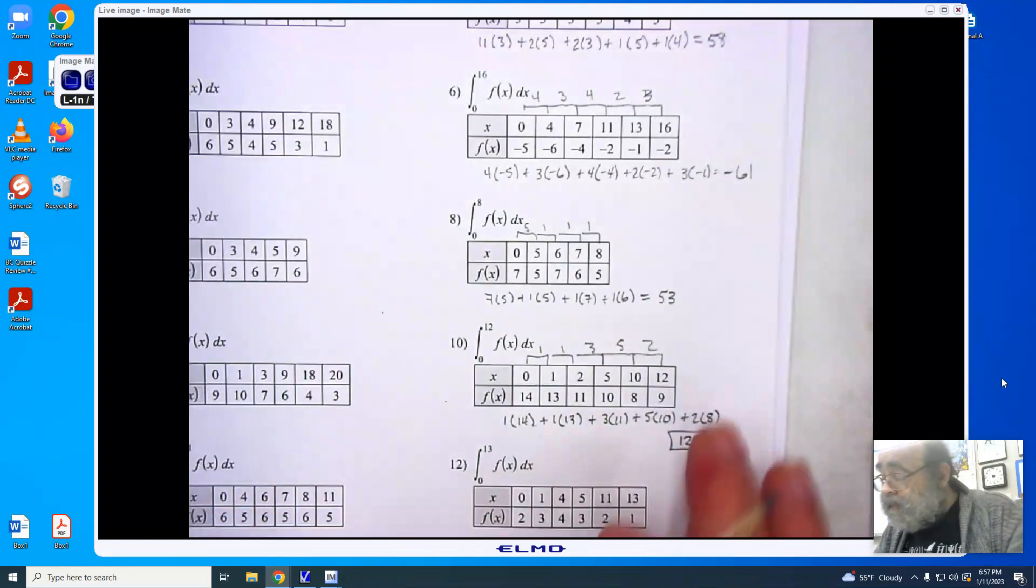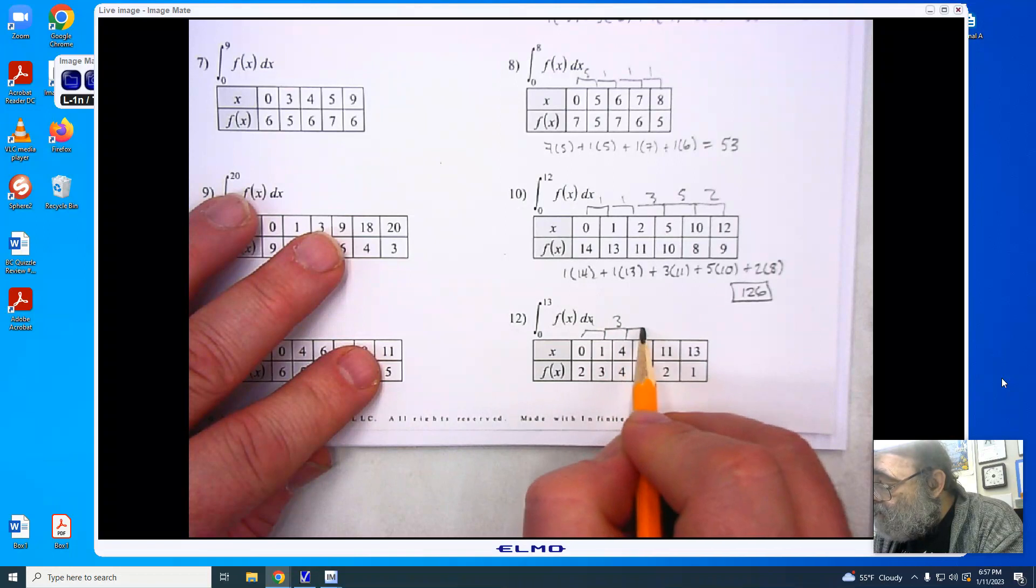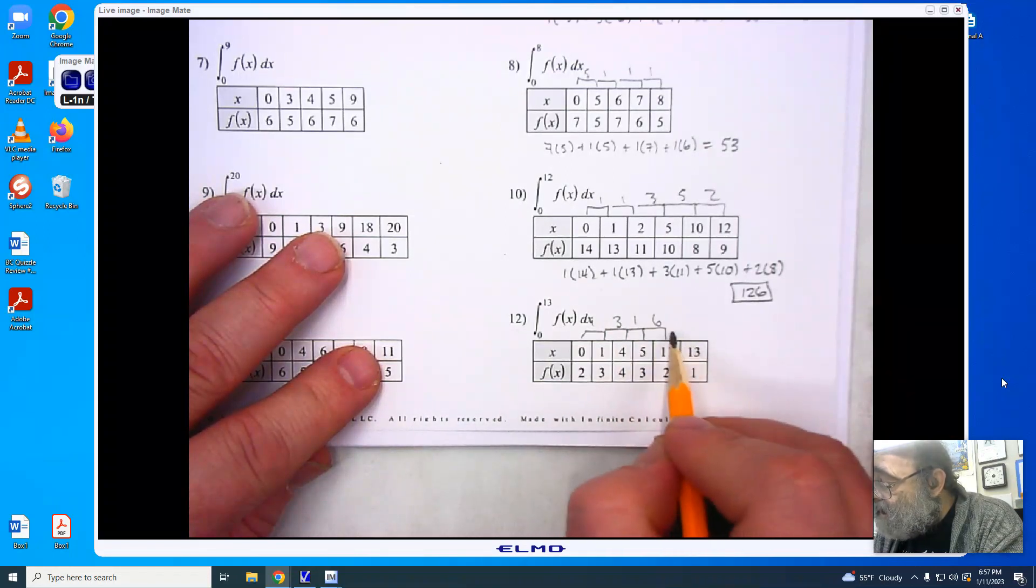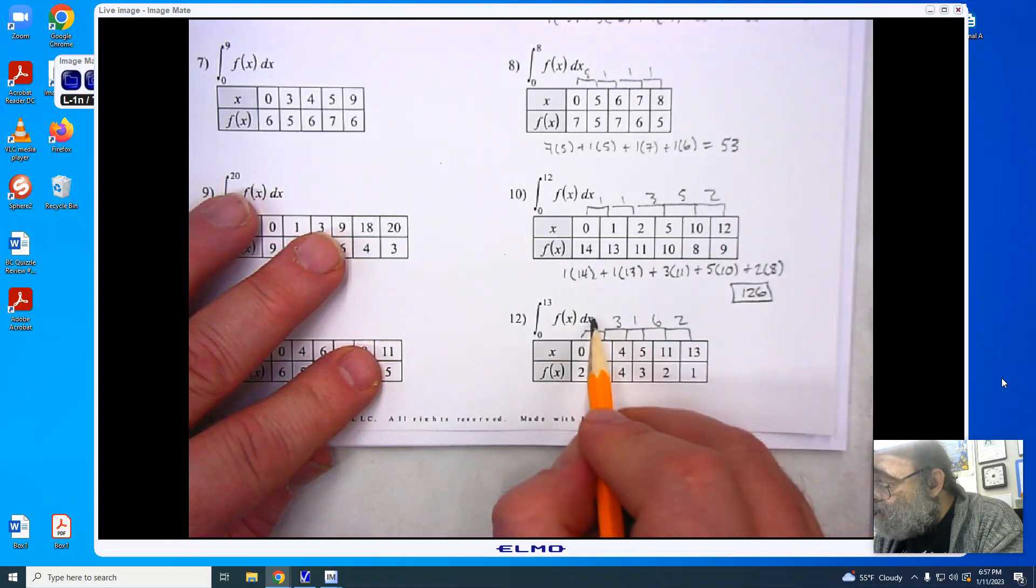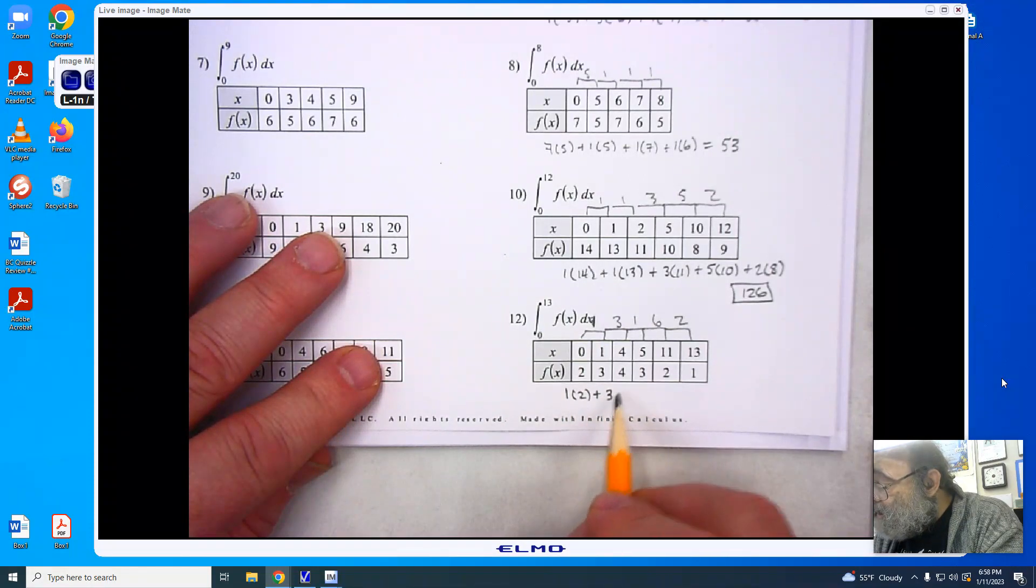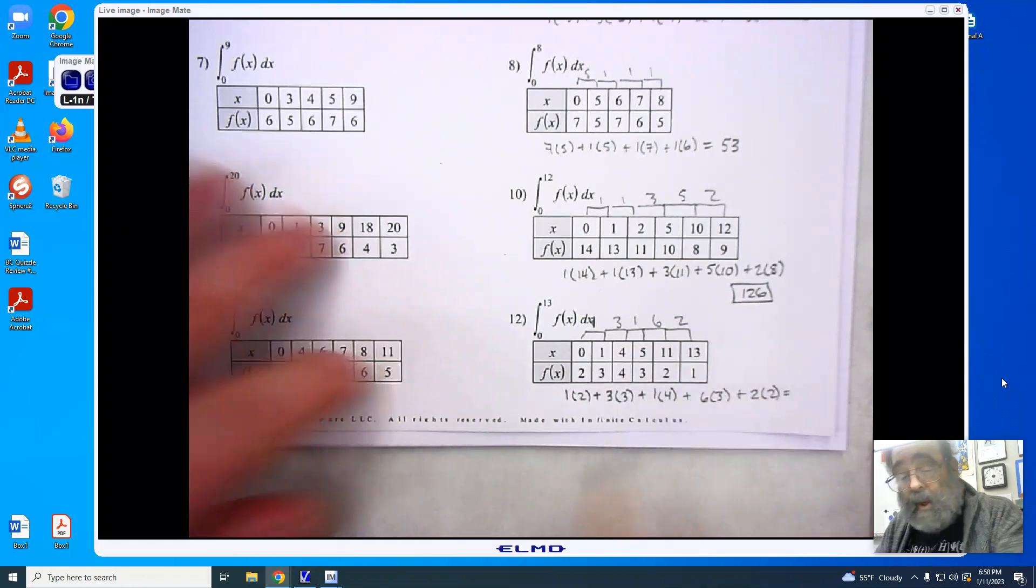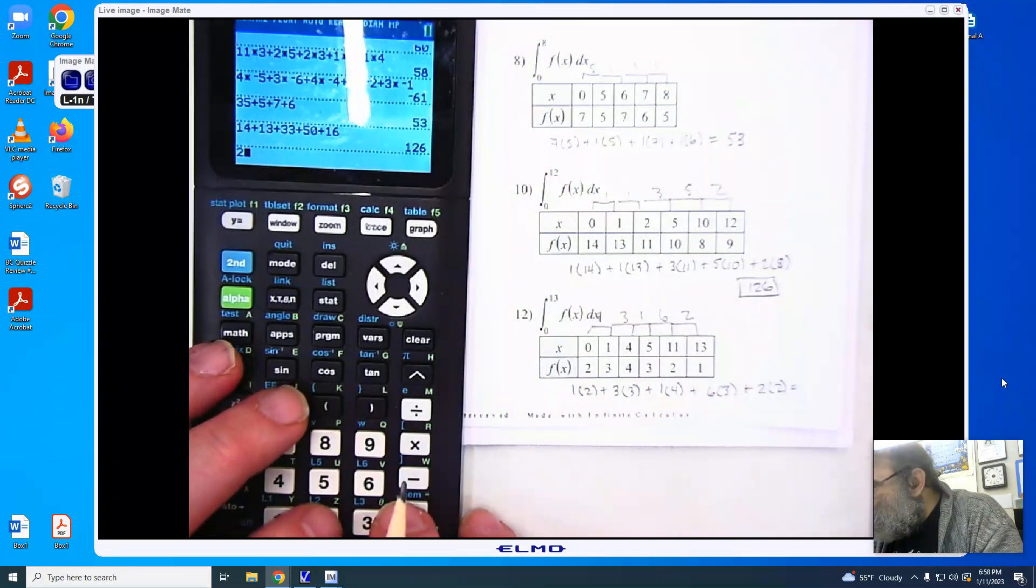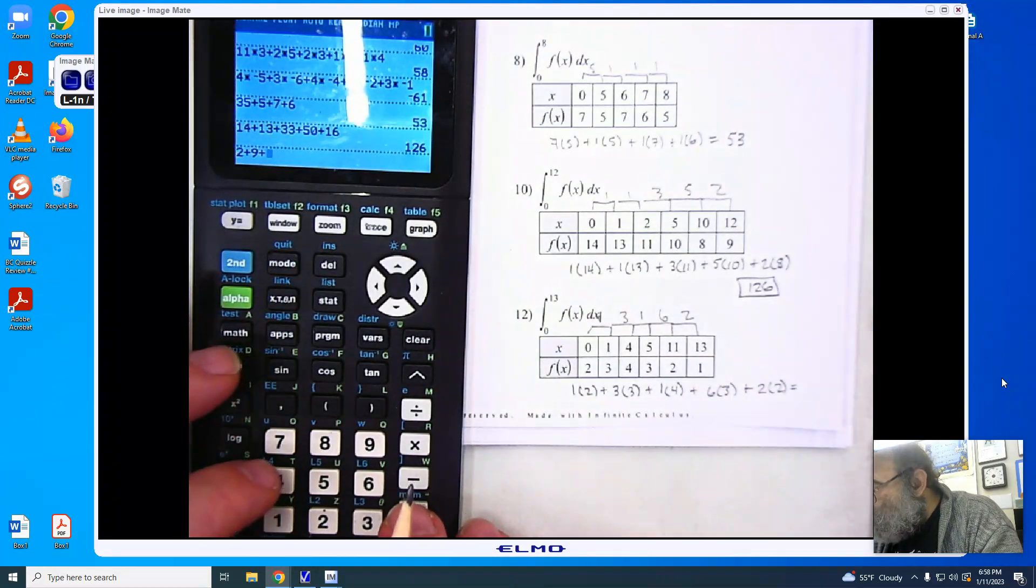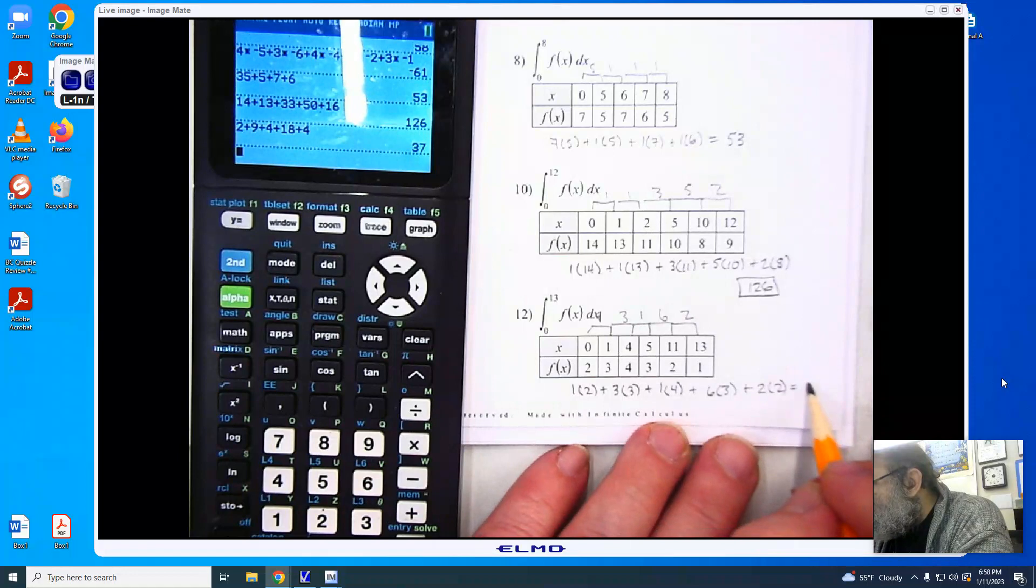Last one. Gap of 1, gap of 3, gap of 1, gap of 6, gap of 2. 1 times 2, 1 times 2, 3 times 3, 1 times 4, 6 times 3, 2 times 2. Adding them all together, 2 plus 9 plus 4 plus 18 plus 4, enter. And I get 37.